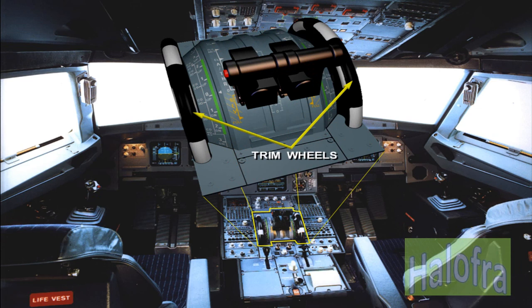Manual control of the THS is achieved through the interconnected handwheels located on the center pedestal. The trim position is indicated in degrees on a scale adjacent to each trim wheel. The normal range is marked by a green band. Crew action on the pitch trim wheel does not disconnect the ELACs; they remain synchronized with the manually selected position. Following touchdown, the pitch trim is automatically reset to zero. When the pitch trim is engaged in electrical mode, a feedback movement is sent to the wheels via the mechanical channel.